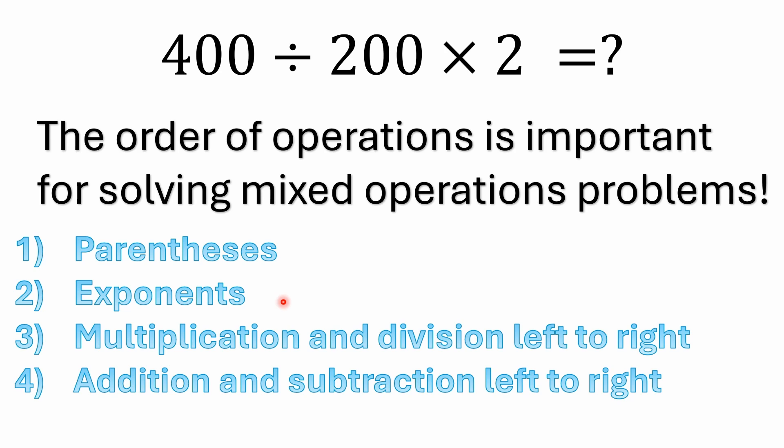First of all, the order of operations, if you're in North America, the typical way you're taught this is through an acronym like PEMDAS, P-E-M-D-A-S, which is parentheses and then exponents and then multiplication and division left to right, and then finally addition and subtraction left to right. The thing to keep in mind here is that multiplication and division have equal precedence and you just solve those left to right. There's not one that has precedence over the other.